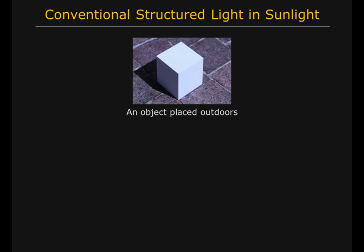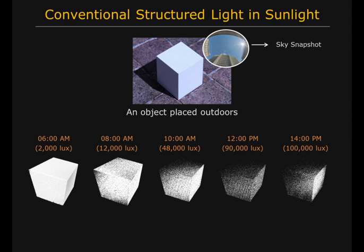Here is an object placed outdoors. The top right shows the sky image taken with a fisheye lens. A small 3D scanner was used to recover its shape at different time points. Because structured light is too weak to compete with sunlight, the result quality degrades severely as sunlight increases.